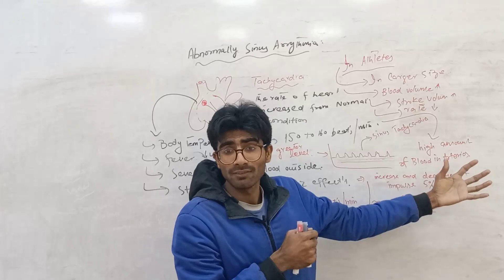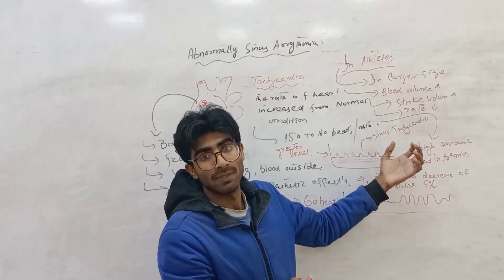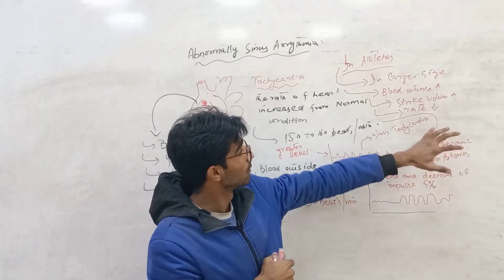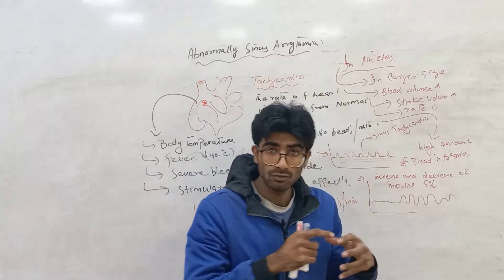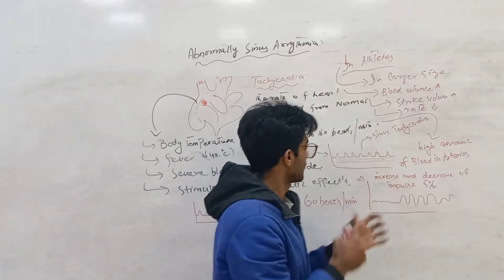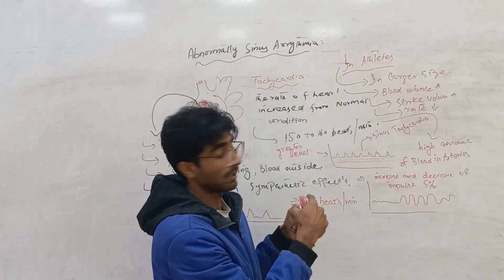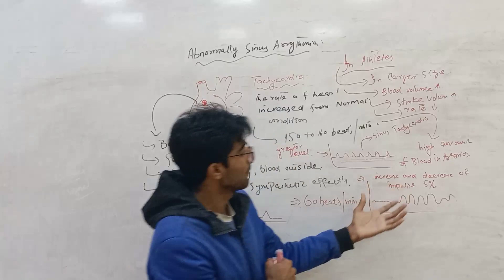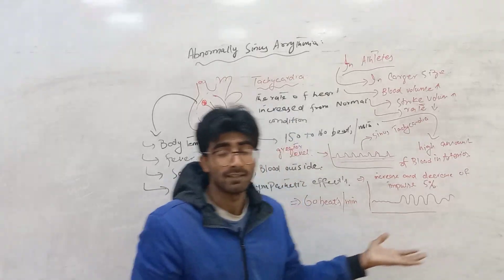We need different kinds of drugs for increasing the heart rate in such cases. This is known as sinus arrhythmia. In athletes, blood pressure decreases due to the volume of blood in the heart being increased, and they have a larger amount of blood in the vessels. Mostly, there is a 5% increase and decrease of impulse in sinus arrhythmia.